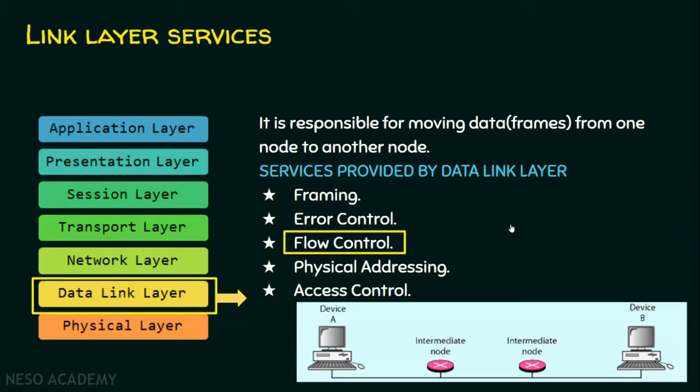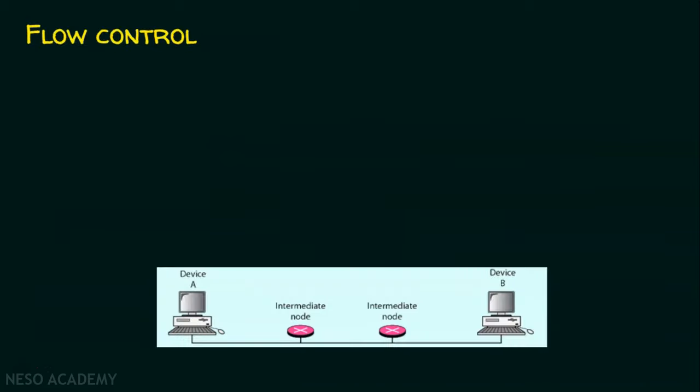Let's start with what is flow control. Suppose, if we have a device A and we have another device B, and these two devices are going to communicate with each other. Let's suppose, if device A is sending some data frames at a very high speed, but device B is not able to handle that much speed.